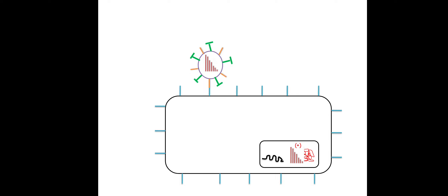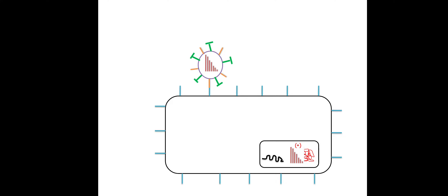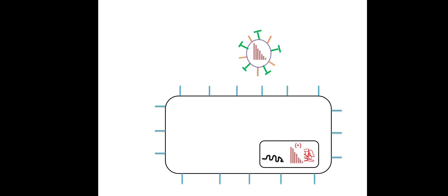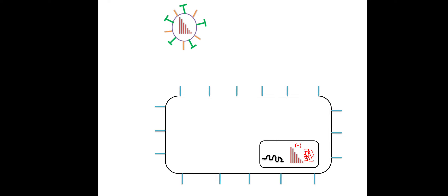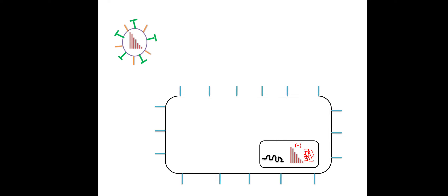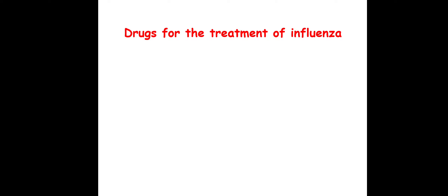Since sialic acid will not easily leave the hemagglutinin of the virus, the neuraminidase protein comes into action. It chops the connection between sialic acid and hemagglutinin. Once neuraminidase successfully completes this job, the matured virus leaves the epithelial cell and goes on to infect other epithelial cells, spreading the infection. This is how influenza viruses work.